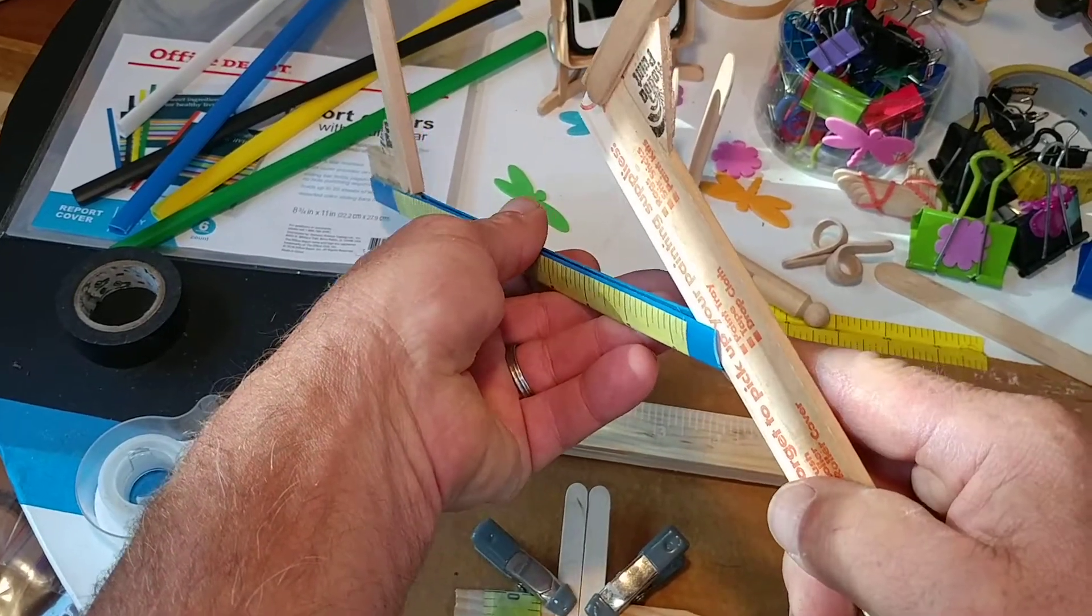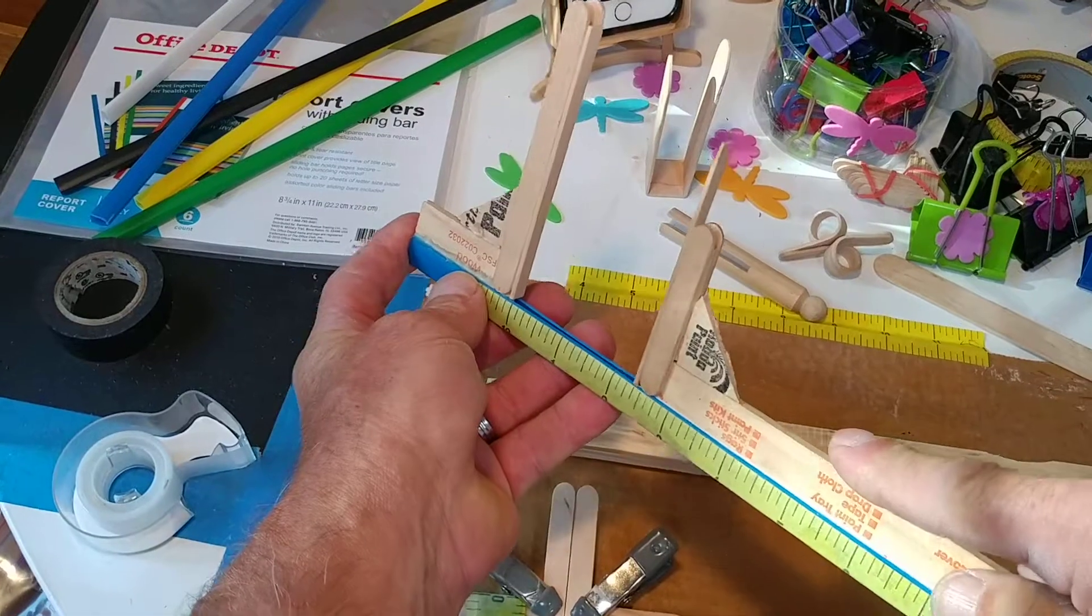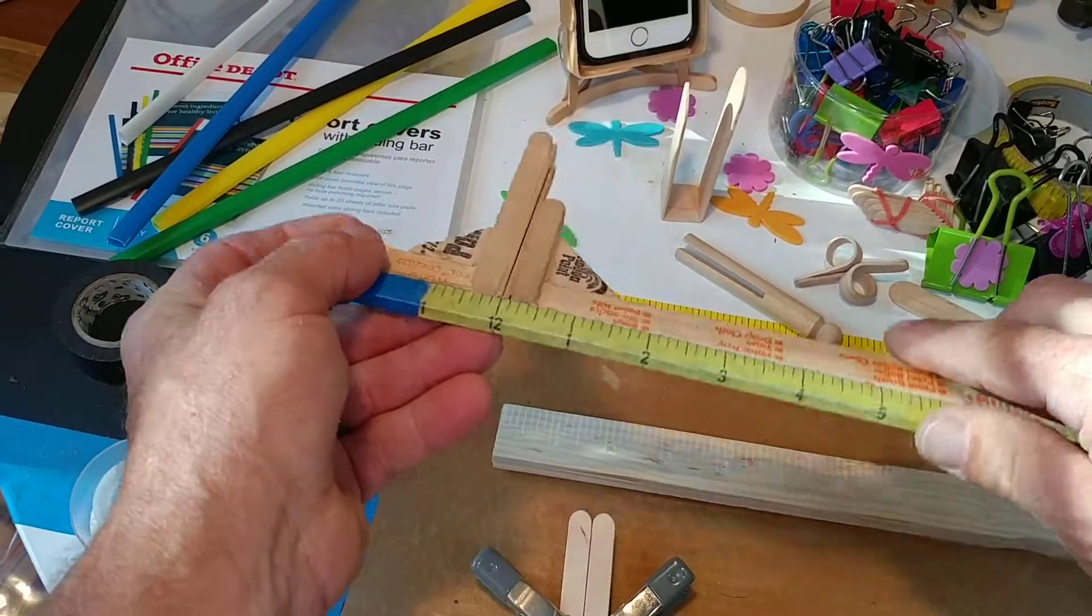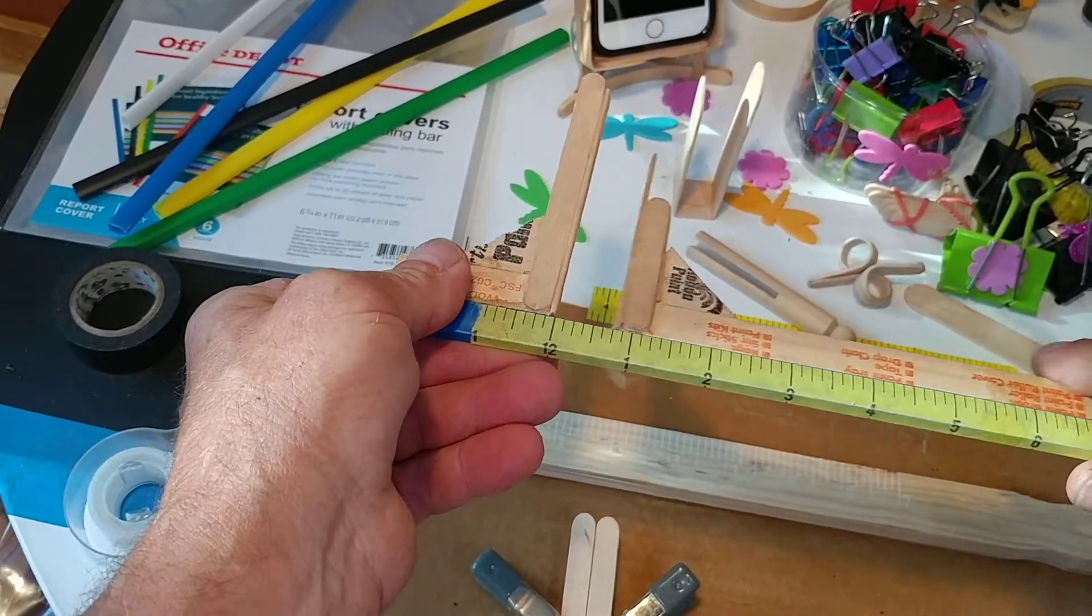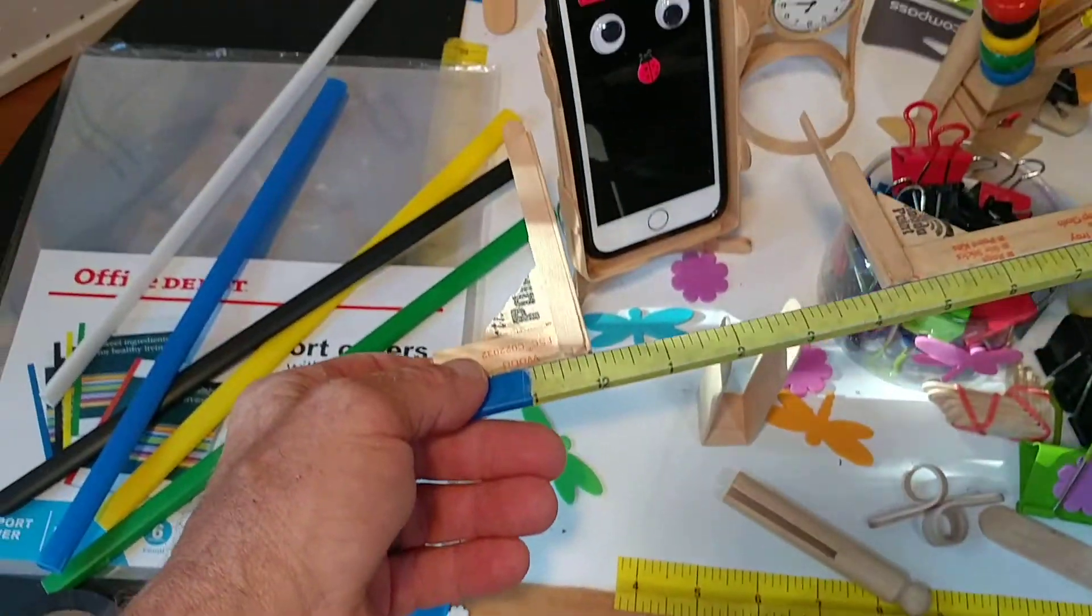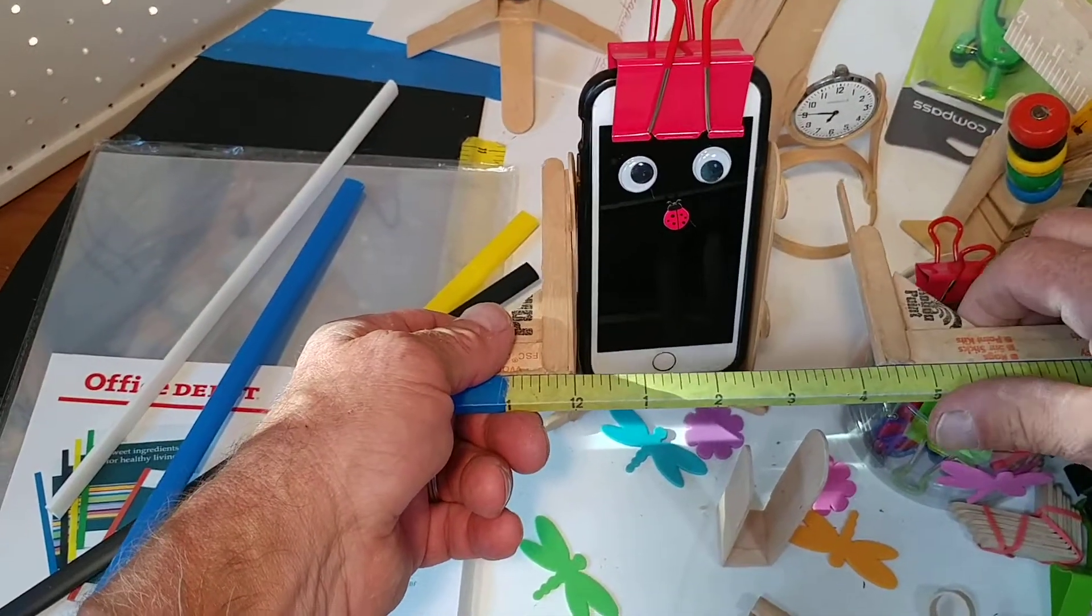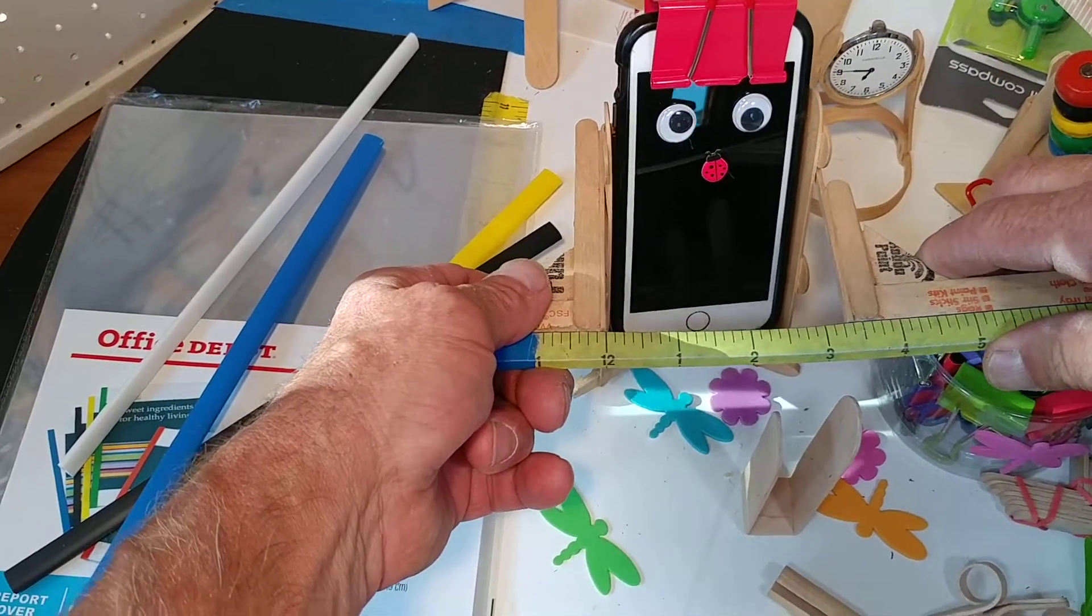See how the paint stick fits in there, and then your ruler tape is along the edge so they can go in there and measure.